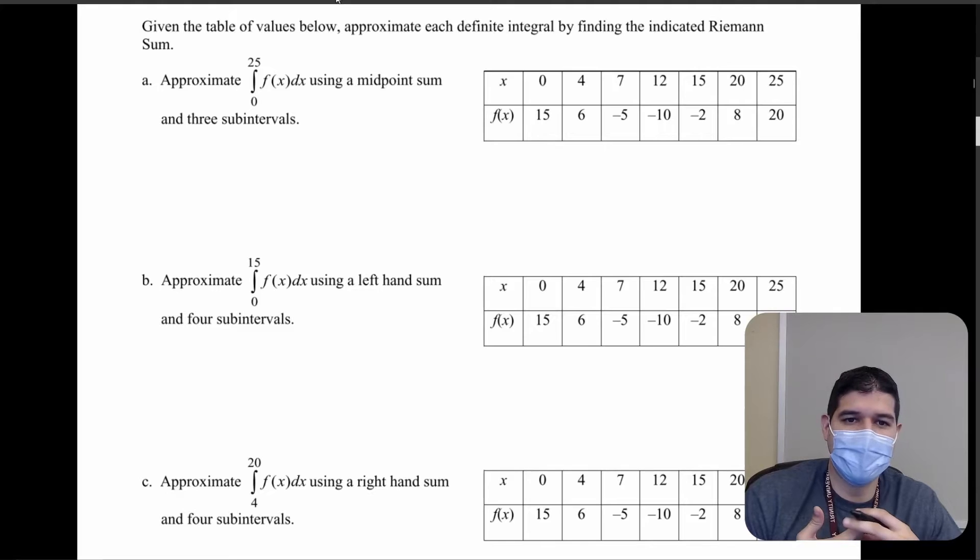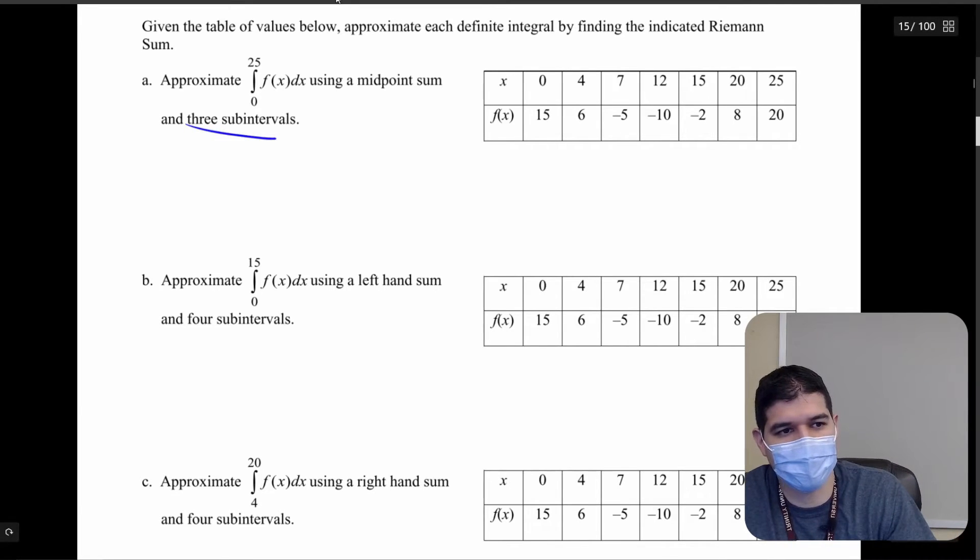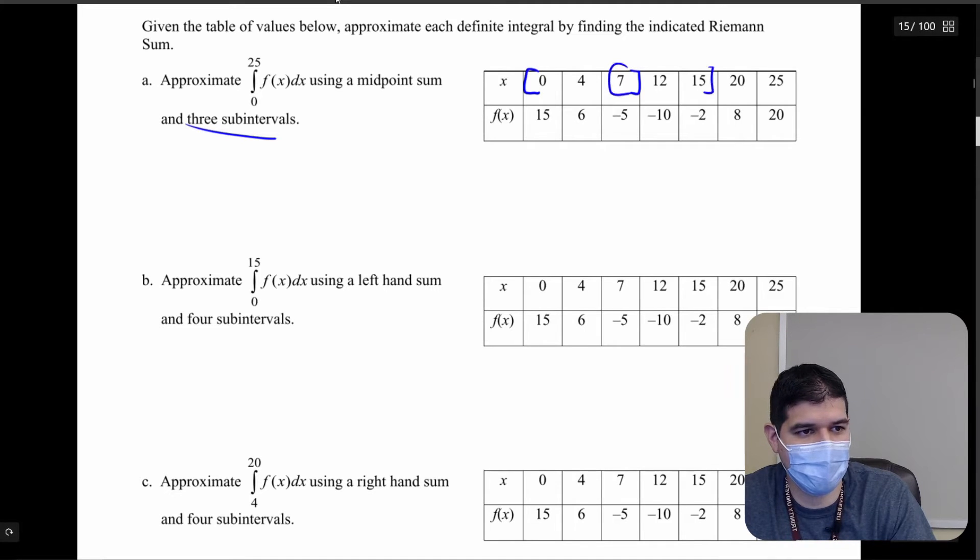In our first problem it's asking us to approximate the integral from 0 to 25 of f of x dx using a midpoint sum and three subintervals. So I'm looking from 0 to 25 and really I just need to cut this into three sections. So I could have one section here, one section here, and then our final section here.